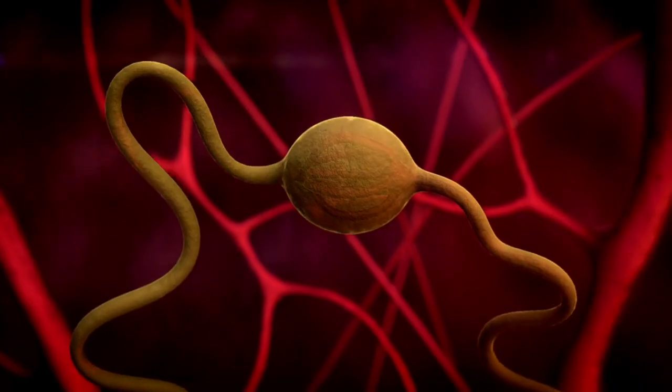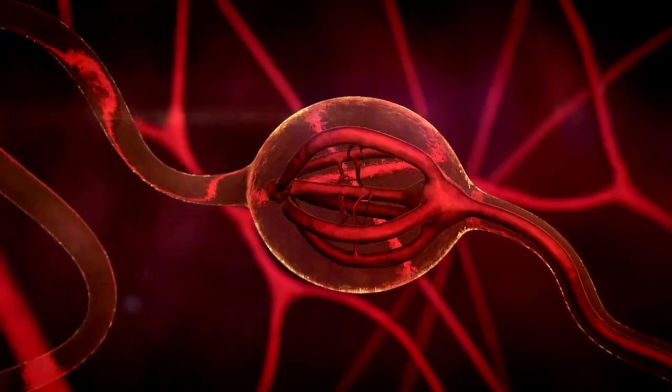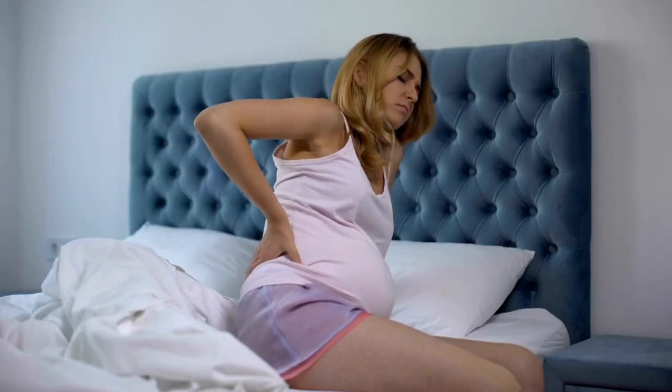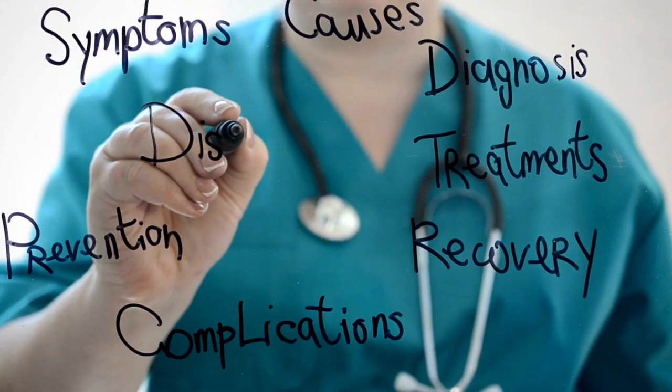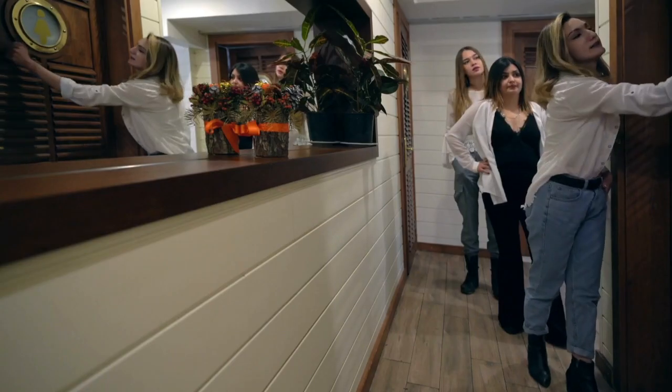The exact reason why fibroid degeneration occurs is still not well understood, but some factors have been linked to its development, including hormonal imbalances, pregnancy, menopause, or trauma to the uterus. Fibroid degeneration can cause a range of symptoms including pelvic pain, heavy menstrual bleeding, back pain, frequent urination, and sometimes constipation.